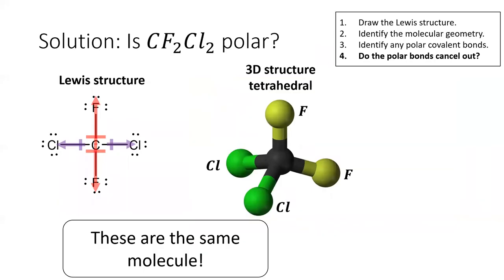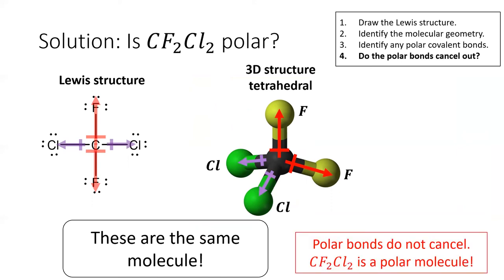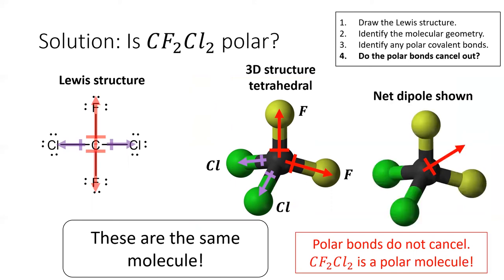Now that we're convinced that these two are the same molecule, we can add in our bond dipoles. We see that the polar bonds do not completely cancel out, and CF2Cl2 is a polar molecule. If we draw the net dipole, it points in between the two fluorine atoms.